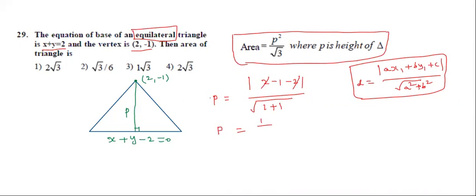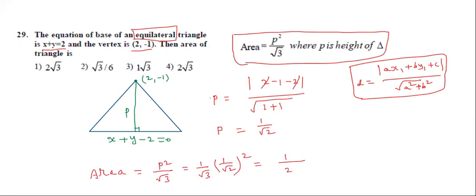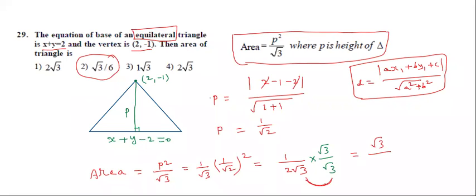p = 1/√2. Area = p²/√3 = (1/√2)²/√3 = (1/2)/√3 = 1/(2√3). Multiplying and dividing by √3: numerator becomes √3, denominator becomes 2√3·√3 = 2·3 = 6. So area = √3/6 square units. Second option correct.